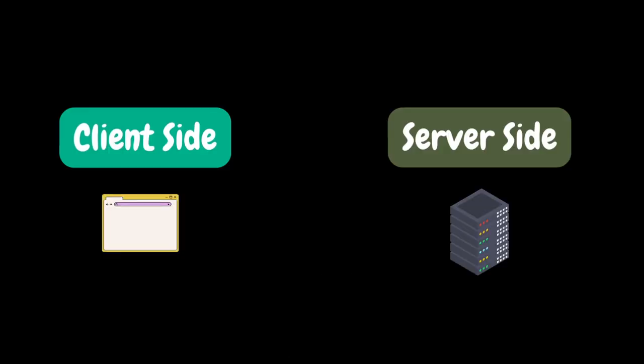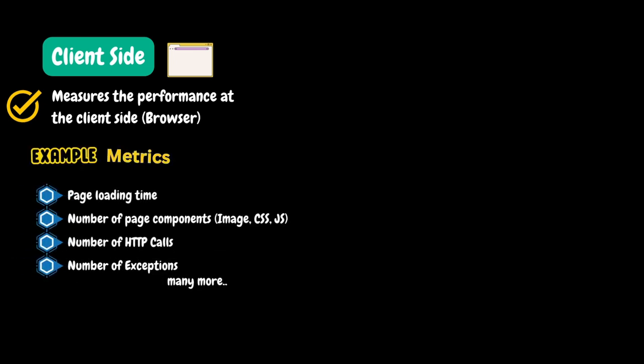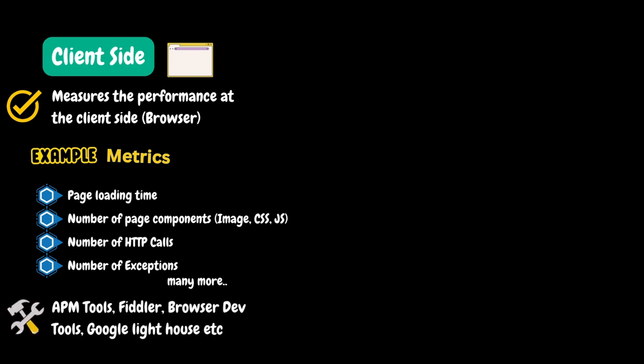Client side metrics measure the performance at the client side, that is the web browser. Our performance testing tools like LoadRunner or JMeter will not provide client side metrics. So it is important to capture client side metrics to understand if there are any issues at the client side. Some example metrics are page loading time, number of page components like images, CSS, JavaScript, etc., number of HTTP calls, number of exceptions, etc. These days, APM tools like Dynatrace are providing client side metrics. We can also use tools like Fiddler, browser dev tools, Google Lighthouse, etc. to monitor client side performance.